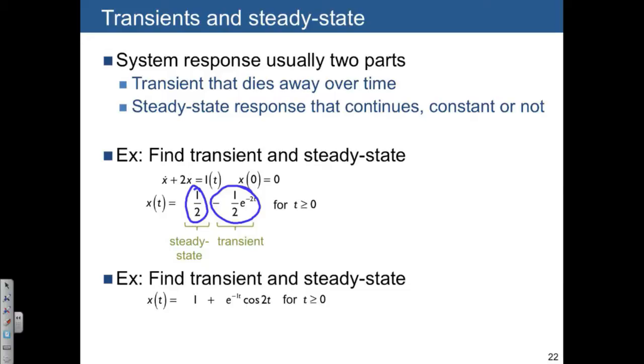Here's another example. We want to find the transient and the steady state here. So what part is the steady state? Well, the one here is never going to die away. So that's going to be the steady state.